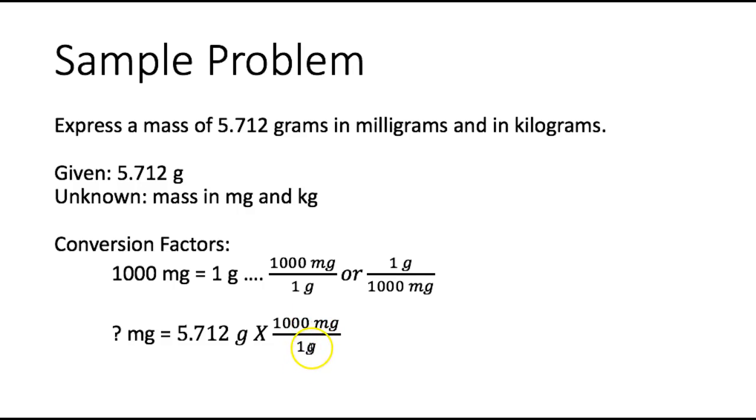I want to use 1,000 milligrams divided by 1 gram. That allows me to cancel out my unit grams. And then to solve the problem I'll take 5.712 times 1,000 and I get 5,712 milligrams. Make sure when you solve these problems that your answer includes the unit. A complete answer includes the number and the unit.